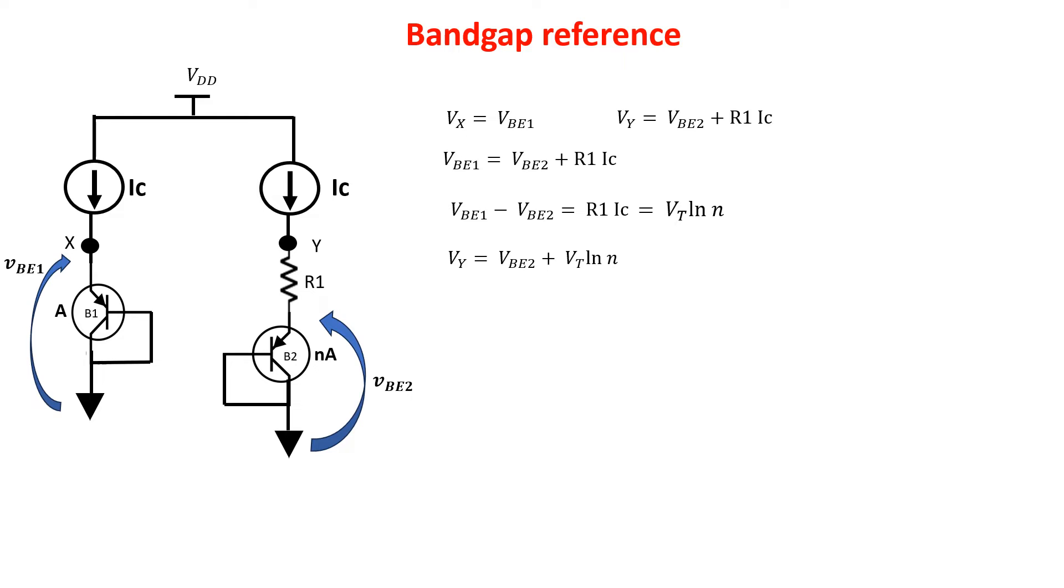This is a start, but it is not enough because we want the variation with respect to temperature being zero. So K over Q times log N should be equal to 1.5 millivolts per Kelvin, but for this to be true would need N equals to 3 times 10 to the seventh at room temperature. It is difficult to obtain such difference in the area between the two BJTs.